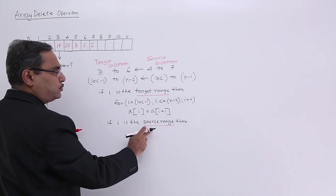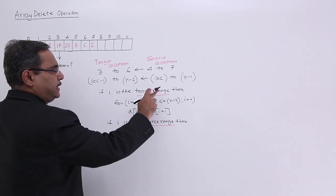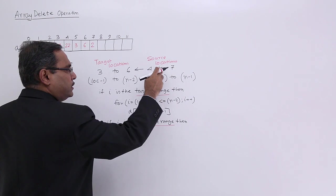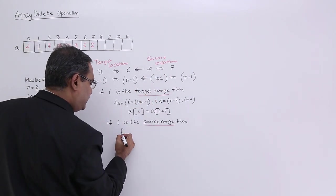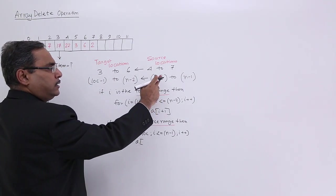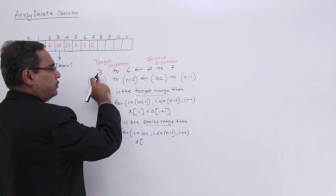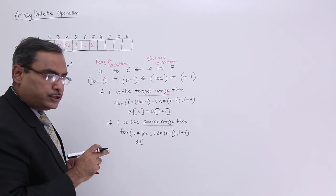If i is the source range, that means it will be ranging from lock to n minus 1, 4 to 7. So I can go on increasing from 4 to 7. So see, i is the source, 4th location's content is going to 3rd location, so ith location's content will be going to i minus 1th location.